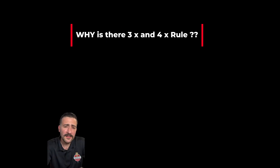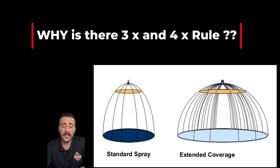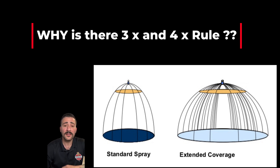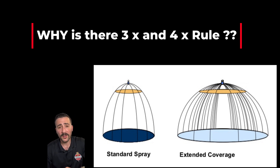So why is there a three and a four times rule? It's because of the difference in spray pattern. The extended coverage and the residential fire sprinkler have a much wider and higher spray pattern. The need for more space to develop that pattern is the reason why we go from three times with the standard spray to four times with the extended coverage and the residential — to give us more space to develop a spray pattern.